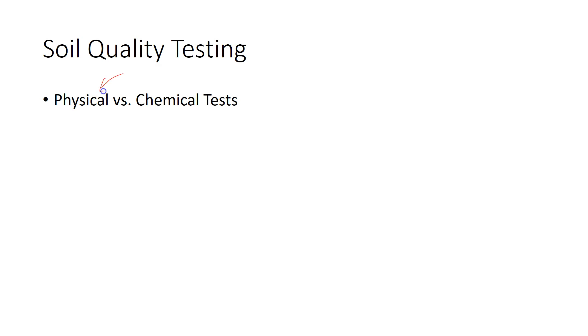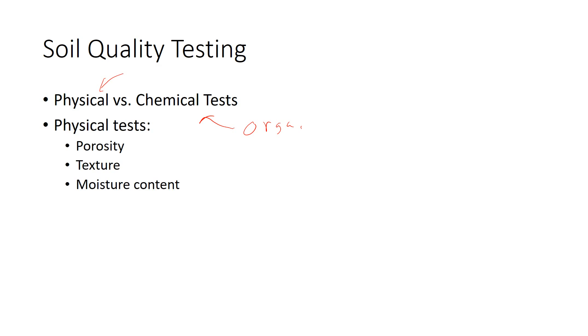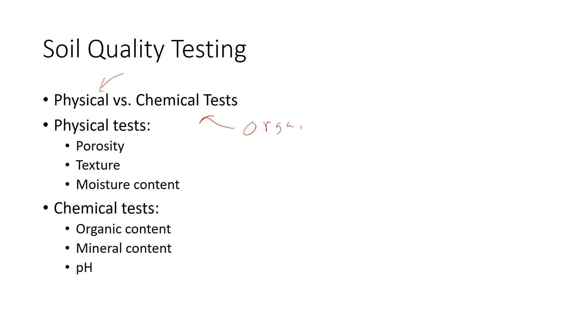We've done a couple of labs involving soil. It essentially comes down to physical versus chemical tests. Physical soil tests are performed on soil without involving chemical reactions — for example, the lab where we poured water into sand and gravel, testing for porosity and permeability. Chemical tests do involve some sort of chemical change to the soil — the organic matter test we did is an example. Porosity, texture, and moisture content are physical tests; organic content, mineral content, and pH tests are all chemical tests.